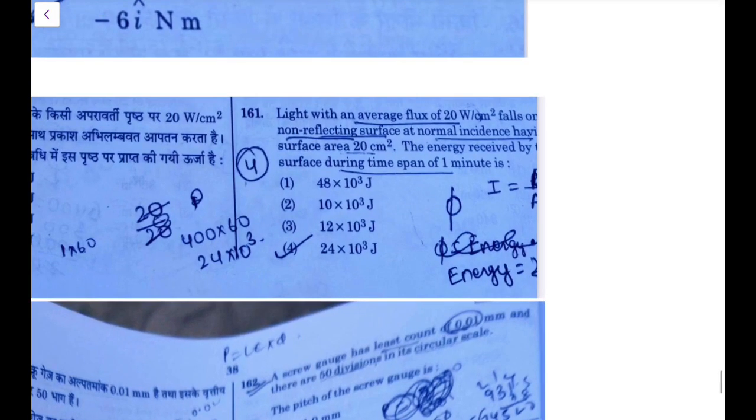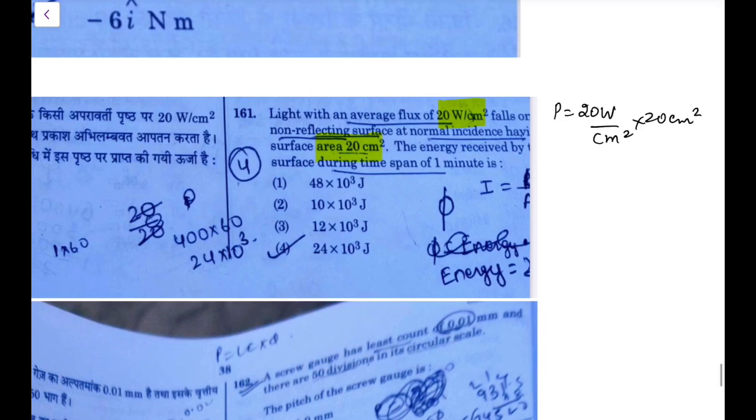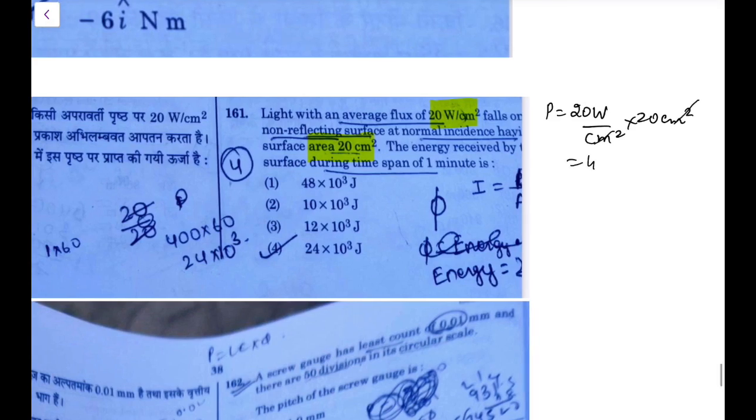Now, the next one: light with an average flux of 20 watt per centimeter square, that is intensity, falls on a non-reflecting surface at normal incidence having surface area 20 centimeter square. Energy received during a span of 1 minute. So it is a non-reflecting energy received, 20 watt per centimeter square. Power would be 20 watt per centimeter square into 20 centimeter square. That is 400 watt, 400 joule per second. So in 1 minute it will have energy p delta t, that is 400 joules per second into 60 seconds. That is 6, 4, or 24 and we have 3 zeros.